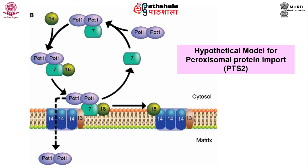There is also a hypothetical model for PTS2 protein import. Dimeric pot 1 is taken as an example of a typical PTS2 protein. Dimeric pot 1 first binds to the PTS2 receptor pex 7; subsequently the coreceptor pex 18 binds to the receptor-cargo complex. Pex 7 associates with pex 13 of the docking complex. After import of the pot 1 cargo into peroxisomes, pex 7 recycles back to the cytosol. Pex 18 however first forms a complex with pex 14, and whether and how pex 18 recycles for another round of import is unknown.